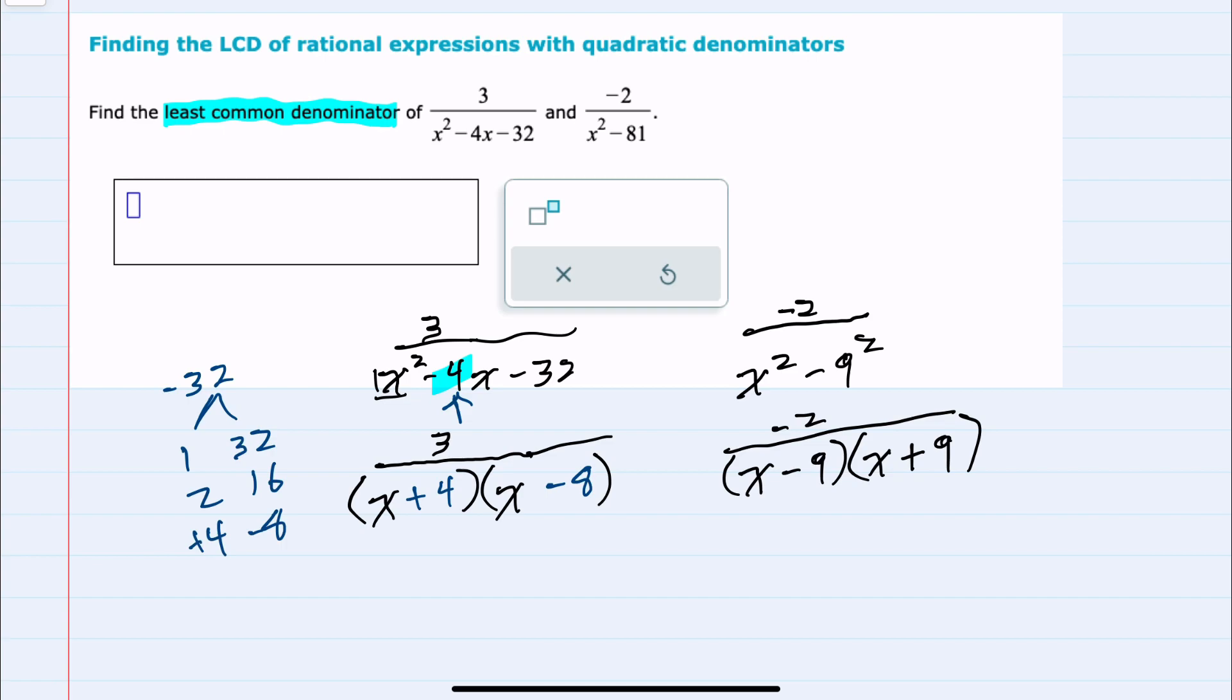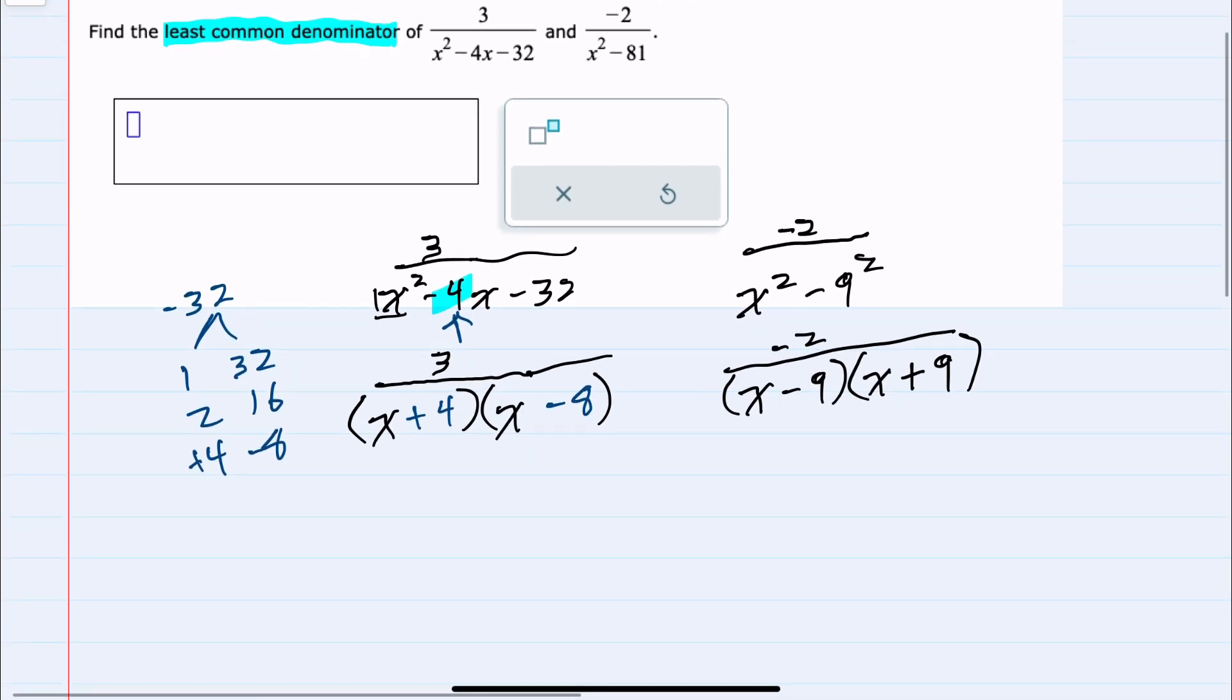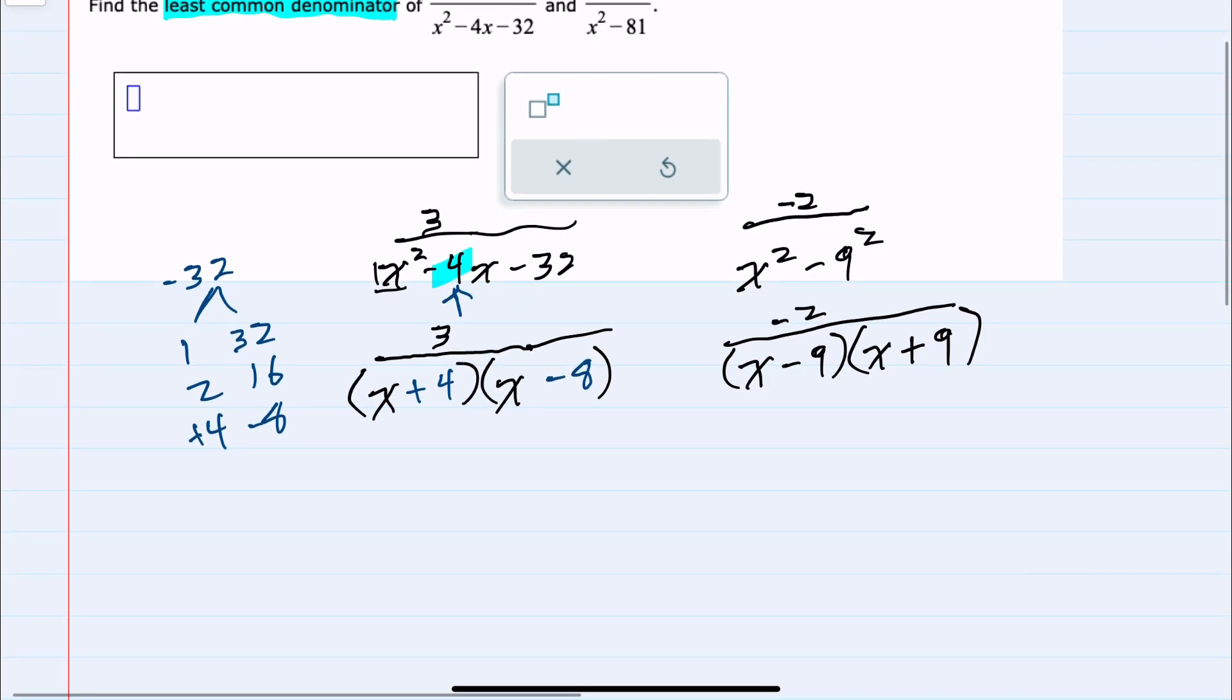We have fully factored both fractions, and my lowest common denominator must have each of these factors represented in it. So I have to have an (x + 4) factor in my least common denominator, which takes care of this. It also has to have an (x - 8), which takes care of the second factor.